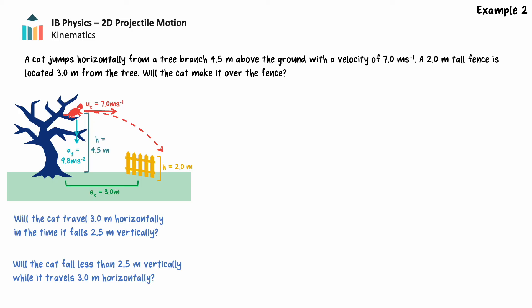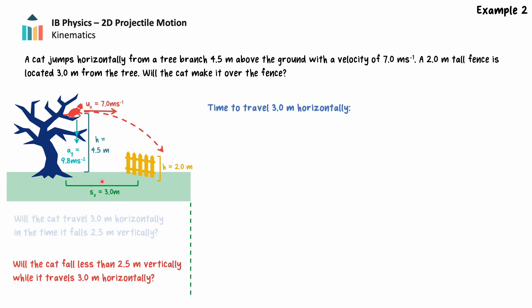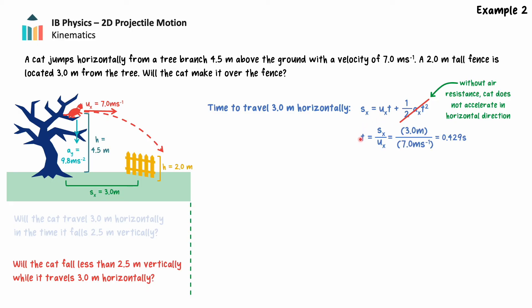Either approach will yield an answer — we're going to use the second framing. As with our previous example, we'll start by solving for time: the time it will take the cat to travel 3.0 meters horizontally. We know the cat's horizontal displacement and horizontal velocity. In the horizontal direction the cat does not accelerate, so we can simplify the uniform acceleration equation s equals ut plus 1/2 at² by cancelling the acceleration-containing term, yielding displacement equals velocity times time. Rearranging, substituting our known values, and solving: the cat will travel 3.0 meters to reach the fence in 0.429 seconds.